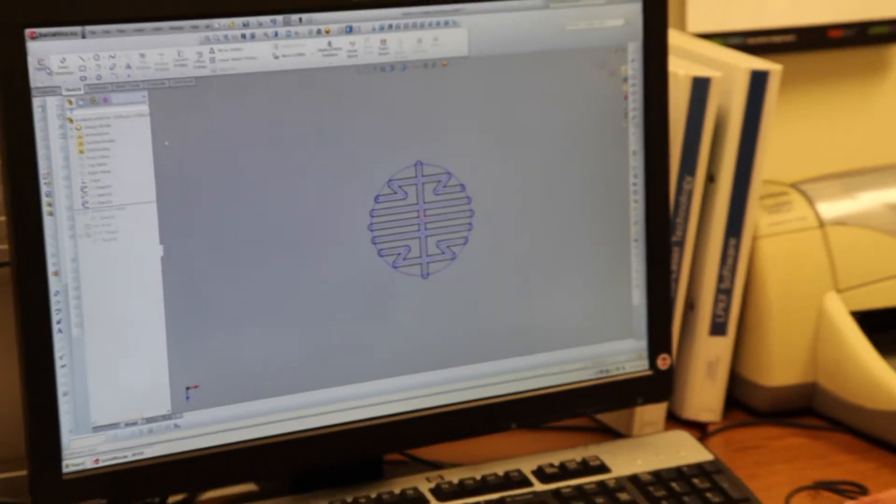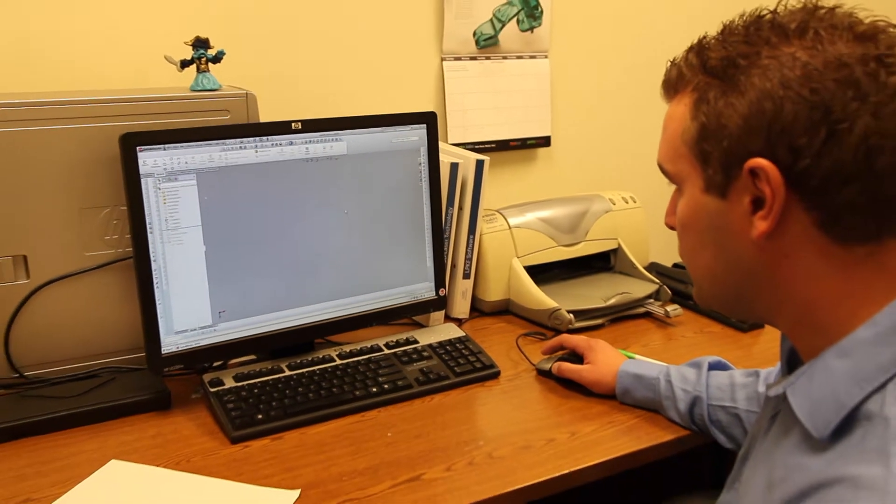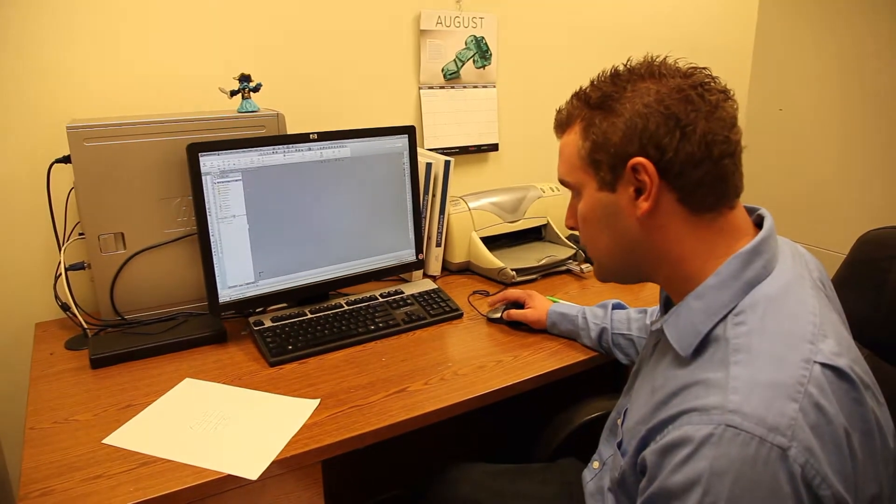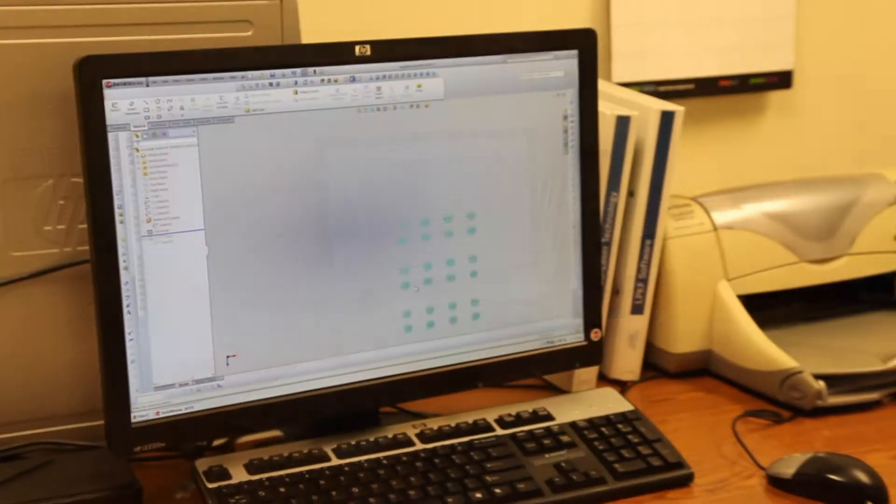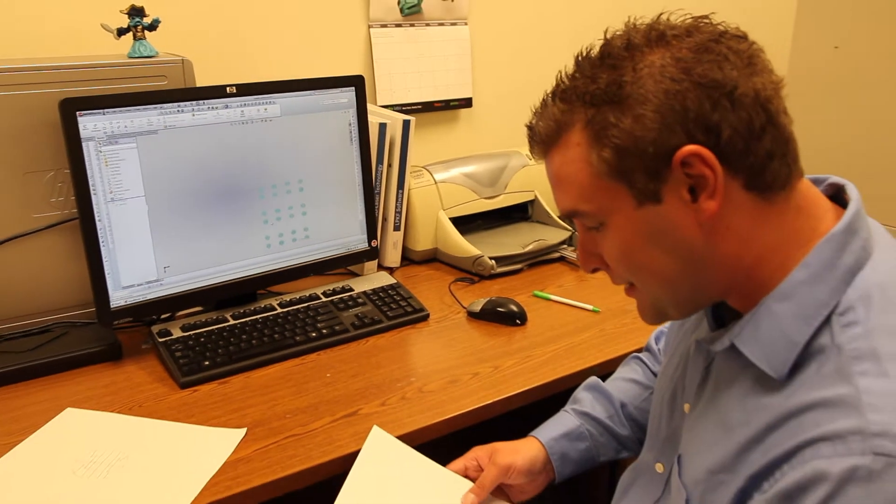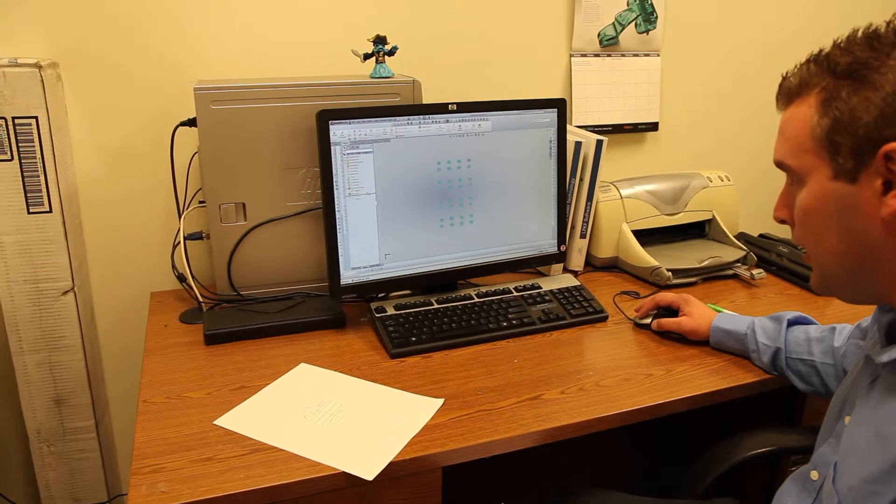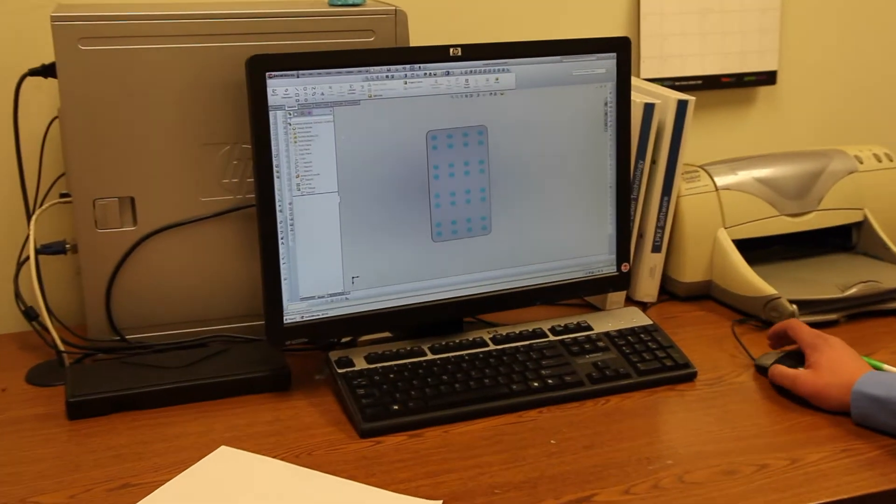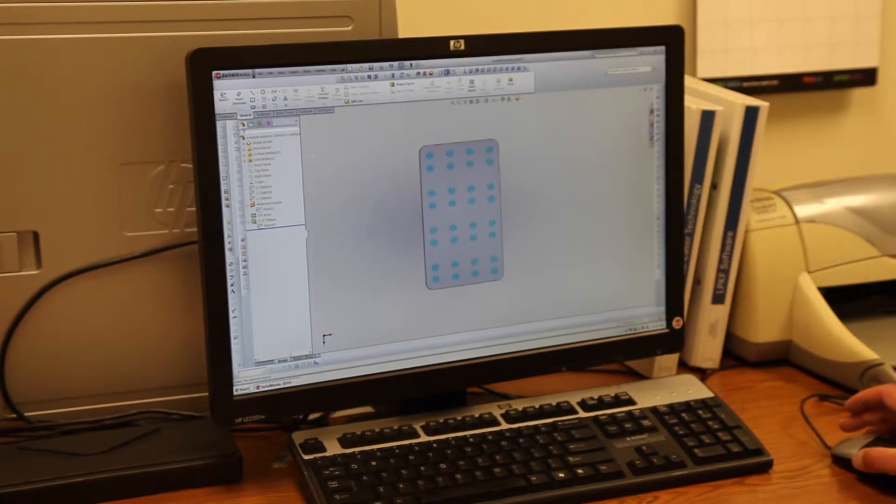Once you have the sketch, all you need to do is make it into a surface, which is this right here. Similarly, you could extrude it slightly with a minimal distance. Then we want to test a lot of these antennas, so we're going to make a whole array pattern and put it onto a plaque. And then once the file is right, you just send it my way.